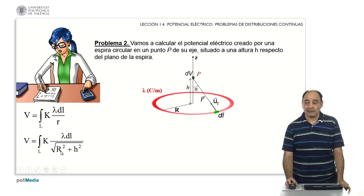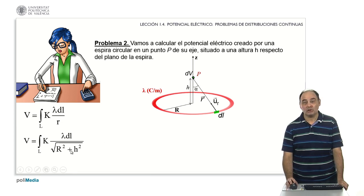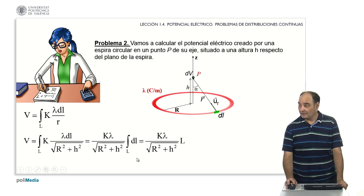Because k is a constant, lambda is a constant, the radius of the circumference is constant, and the h is that of that fixed point. So practically everything we can take out of the integral.